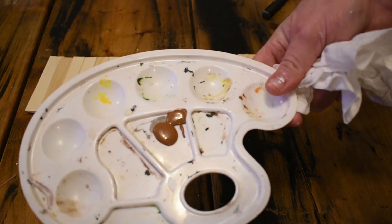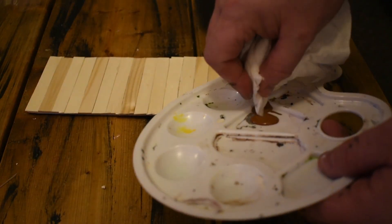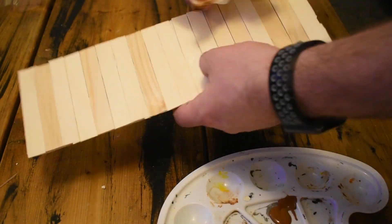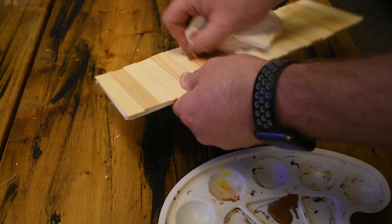Next up, you're going to take a damp paper towel and you're going to dip it into the brown paint, and then you're going to use it as kind of a stain on these popsicle sticks.